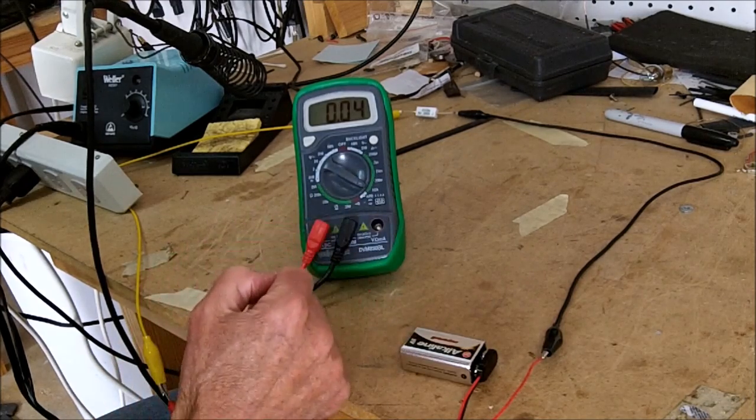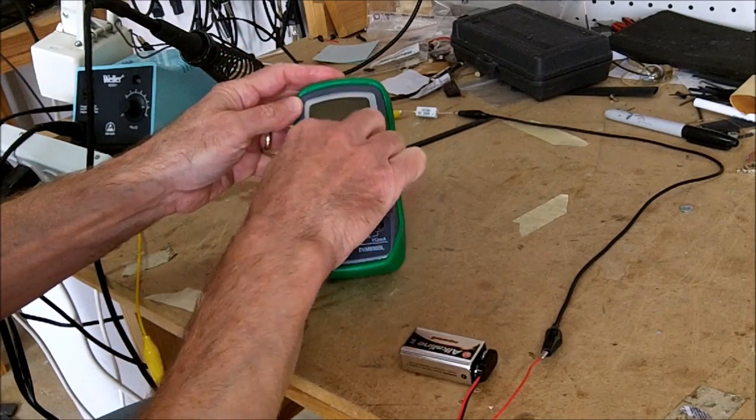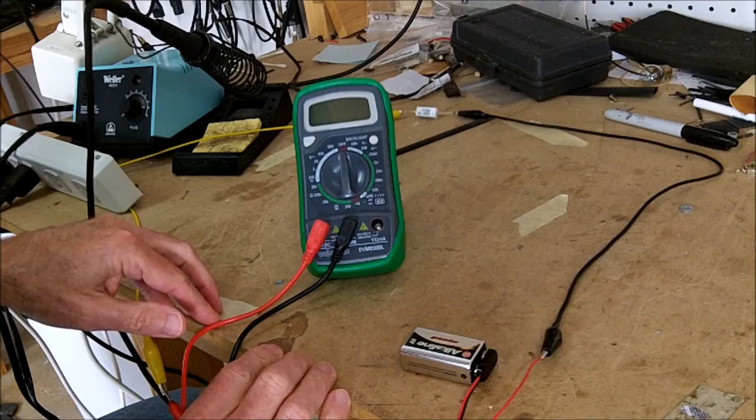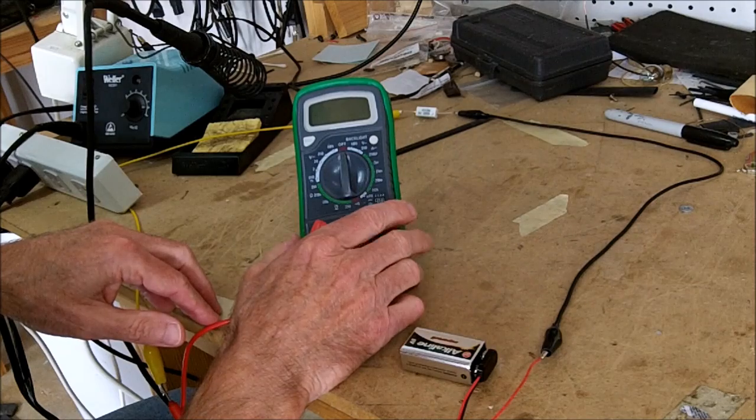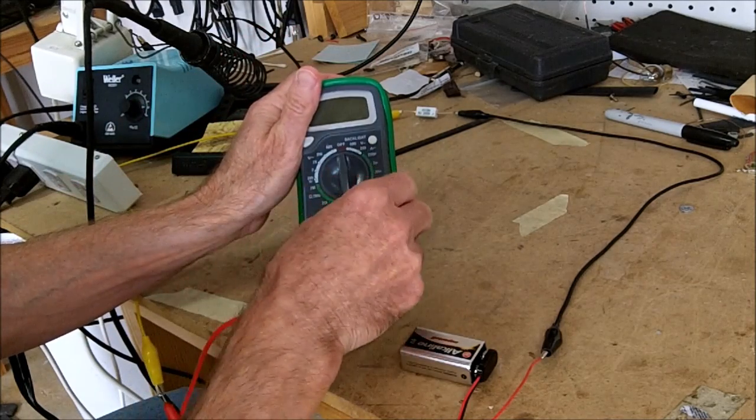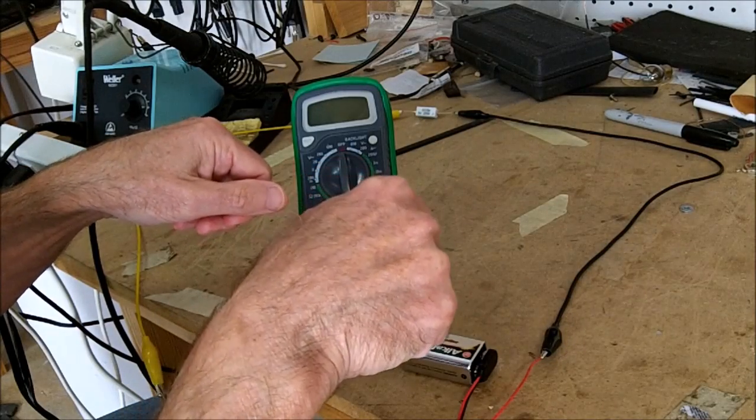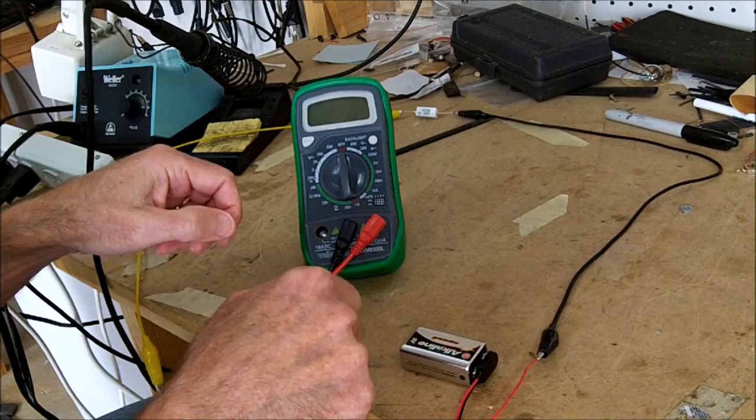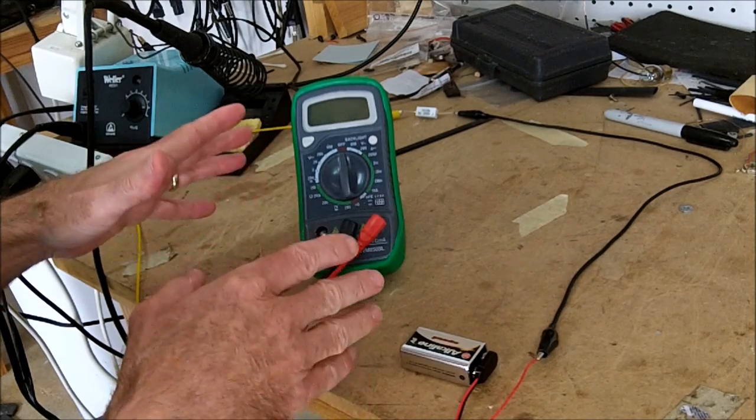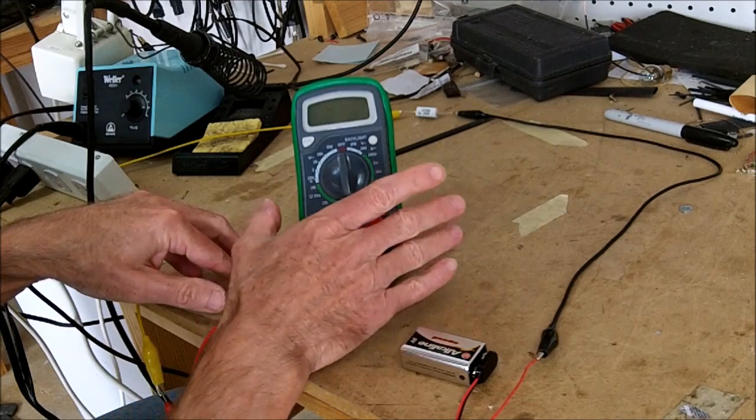Now let me say one thing about using the current section of the meter. You need to be careful when you have it in that position not to, for instance, put the probes onto a 9-volt battery like this, because in that case there would be no resistance in the circuit and you would have infinite current flowing, at least for a short period of time, and you could damage your meter.